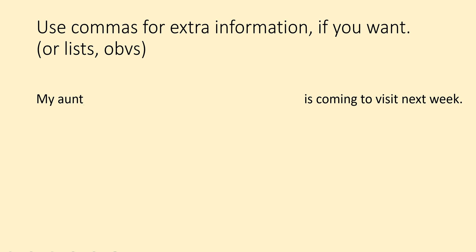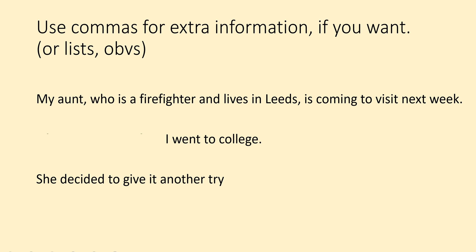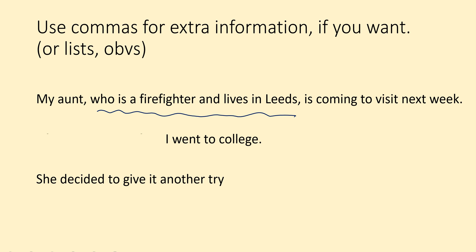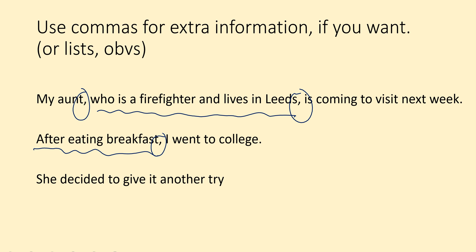Here's a sentence: 'My aunt is coming to visit next week.' That makes sense on its own. But you could add extra information in the middle: 'My aunt, who is a firefighter and lives in Leeds, is coming to visit next week.' 'Who is a firefighter and lives in Leeds' is extra information — you can take it out and the sentence still makes sense. And it doesn't make sense on its own either. When extra information is in the middle, you need a comma on each side; if it's at the beginning, you only need one comma after it.